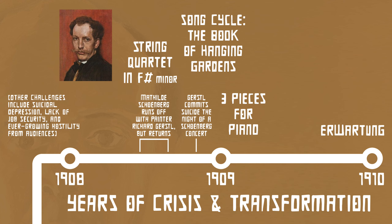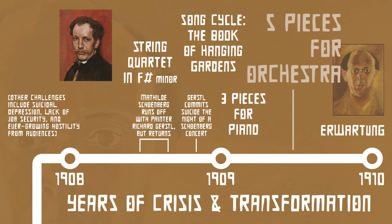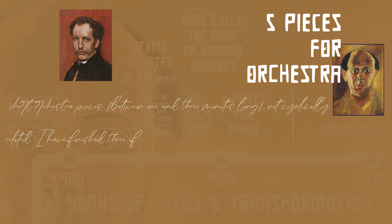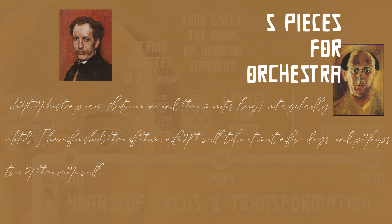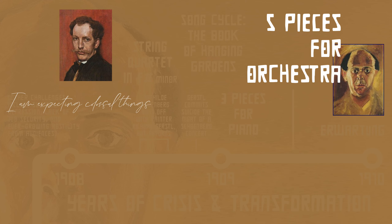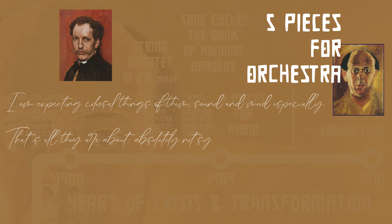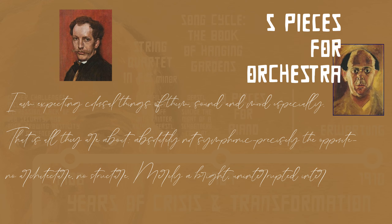It was around this time that Strauss mentioned that he'd been looking for works to present at his concerts at the Berlin Hofkapelle. Schoenberg wrote back to him to mention a new series of works: short orchestral pieces, between one and three minutes long, not cyclically related. "I have finished three of them. A fourth will take at most a few days, and perhaps two or three more will be born later. I am expecting colossal things of them, sound and mood especially. That is what they are about. Absolutely not symphonic. Precisely the opposite. No architecture. No structure. Merely a bright, uninterrupted interchange of colors, rhythms and moods."